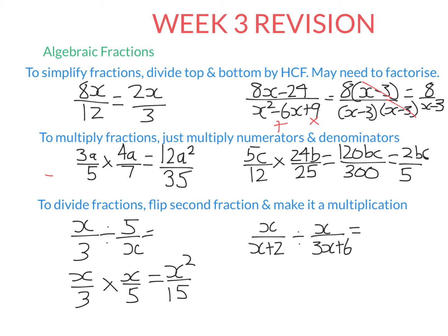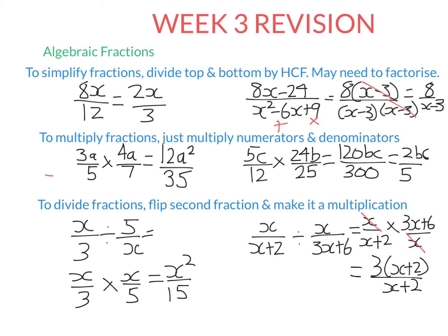This next one is more complicated because we also need to factorize. I leave the first fraction alone, then flip the second fraction and make it a multiplication. When multiplying fractions, you can cancel any common factors — I can cross out the x's. Also, 3x plus 6 can be factorized to 3 times (x plus 2). Because (x plus 2) appears on top and bottom and is being multiplied, I can cross it out. The final answer is 3.